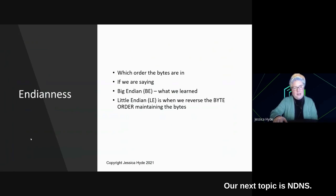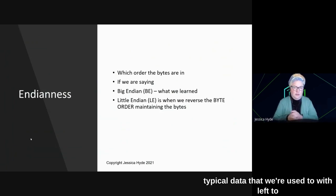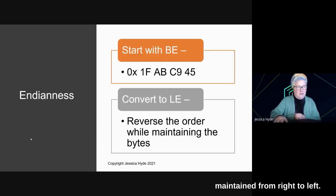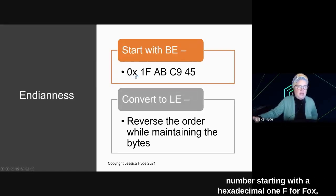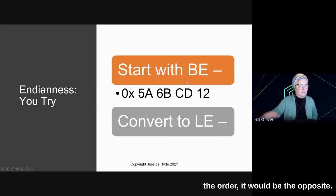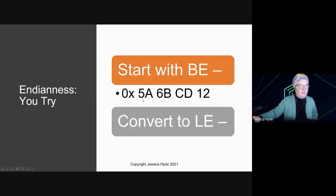Our next topic is Endianness. Endianness has to do with the order that the bytes were portrayed. If we are saying Big Endian, this is the typical data that we're used to with left to right in terms of our numeral order. Little Endian is the reverse of your byte order. This is when your bytes are maintained from right to left. We are going to maintain the byte when we read the order. So for example, if we have a Big Endian number starting with hexadecimal 1F, Alpha Bravo, Charlie 9, 4, 5, when we reverse the order, it would be the opposite. I'll show you with this example. Hex 5A, 6B, Charlie Delta 12. Let's go ahead and convert it to Little Endian.